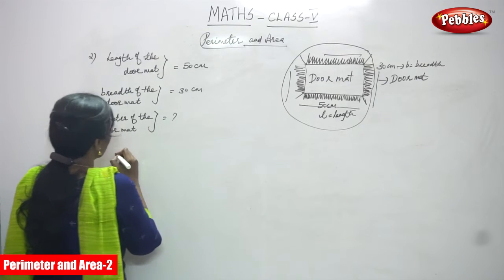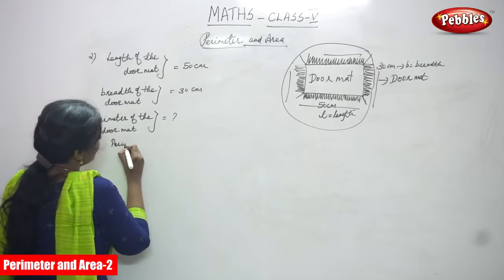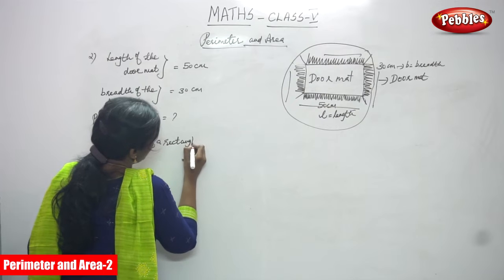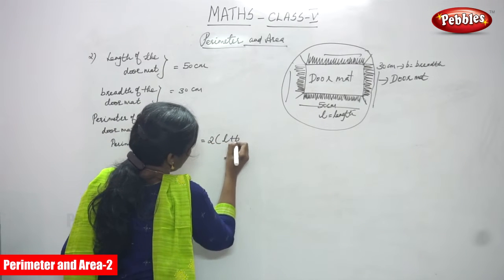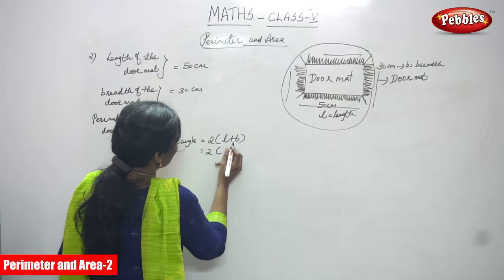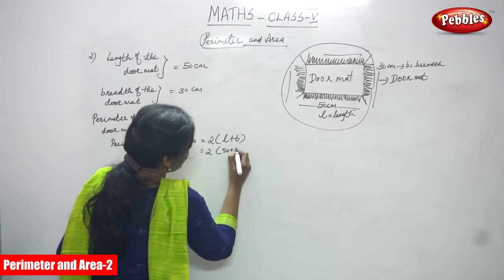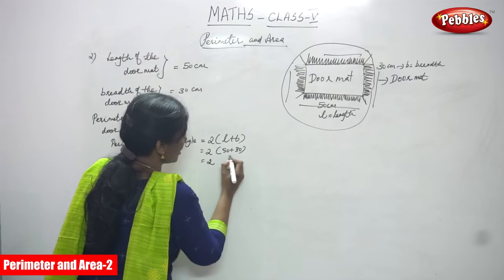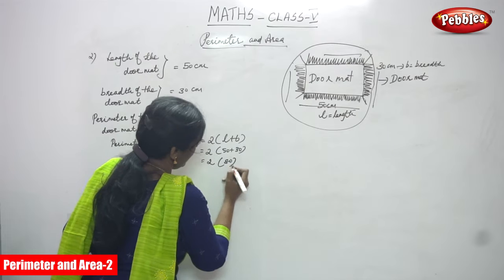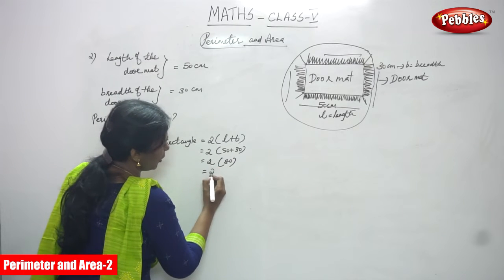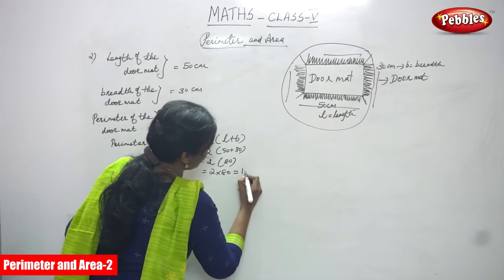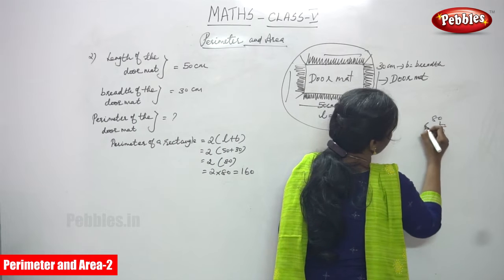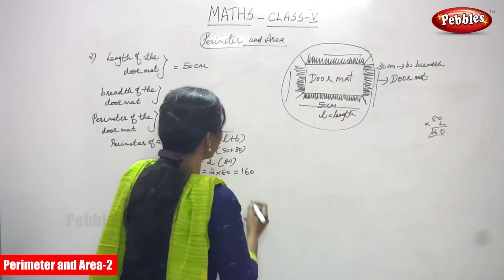We have to apply the formula for the perimeter of a rectangle. The perimeter of a rectangle formula is 2 into (L plus B). So we apply 2 into (50 plus 30). First, calculate the bracket: 50 plus 30 equals 80. Then 2 into 80 equals 160. The answer is 160 cm.